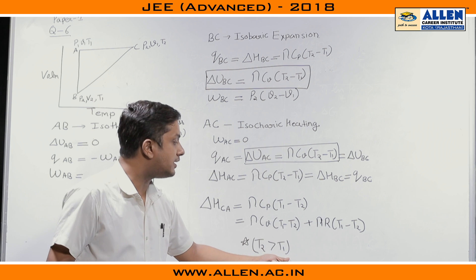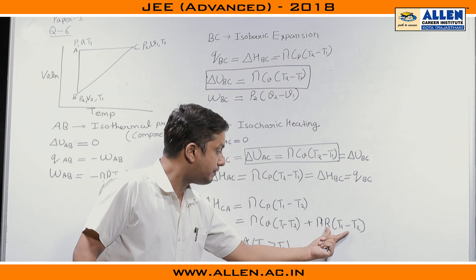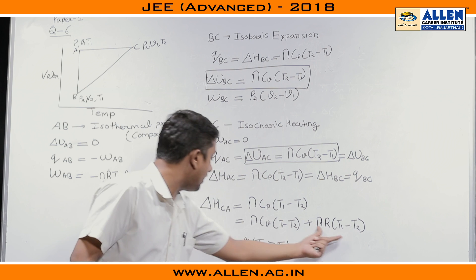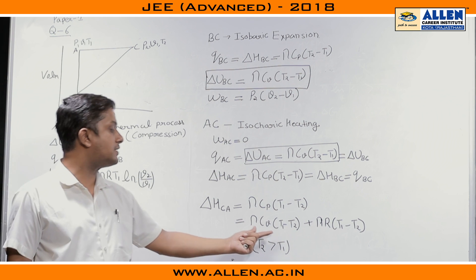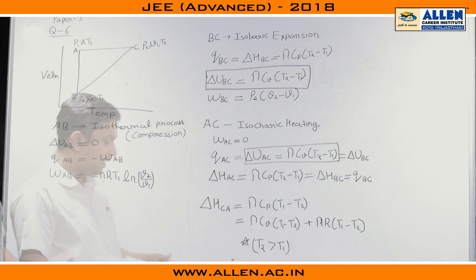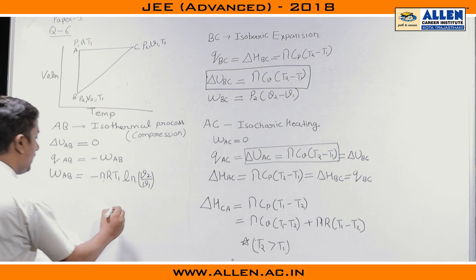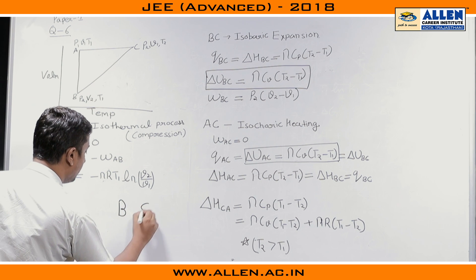Now, T₂ is greater than T₁. So, this value will be less than 1, yaniki negative. This is negative. So, this magnitude will be less than this value. Hence, my answer will be B and C.